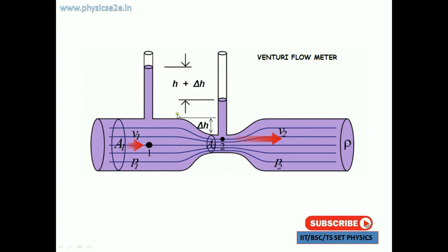We measure the difference between the two heights. This height is h plus delta h because the throat value is narrow compared to the normal position. This value is delta h, and the other is h plus delta h. At the throat, the pressure is p2 and velocity is v2. This is the outlet for the throat, and the density is rho.